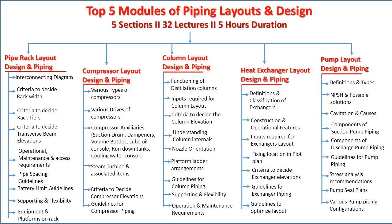We will cover the criteria to decide rack width — how many lines we are going to add and how we decide the pipe rack width. Then we will look at how to decide the number of tiers. Width and number of tiers are important aspects, along with who the various stakeholders are and what parameters we consider to calculate all these things.